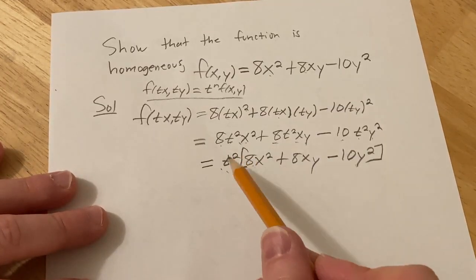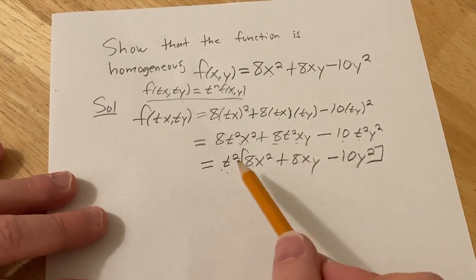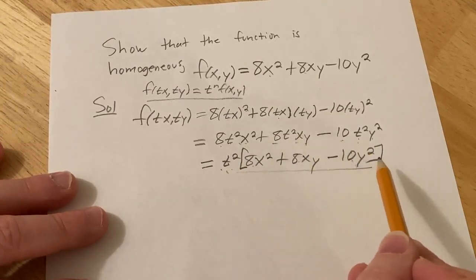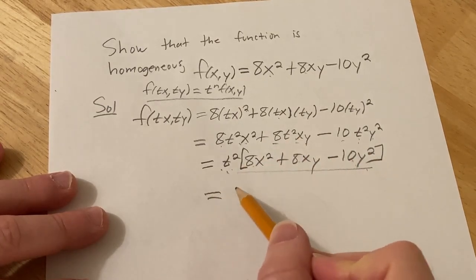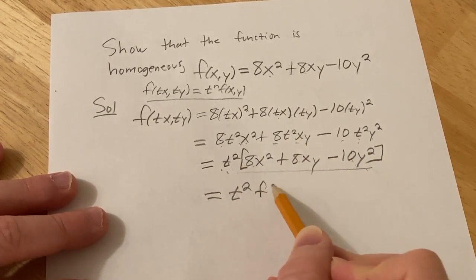t squared times this is this, t squared times this is this, t squared times this is this, so all of this is just f of xy. This is t squared f of xy.